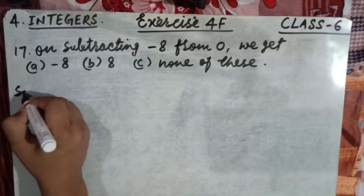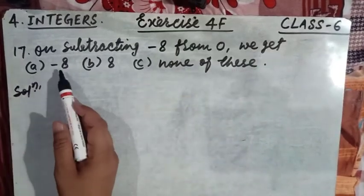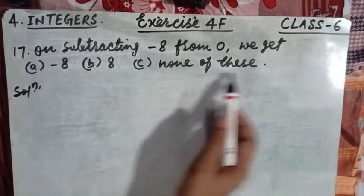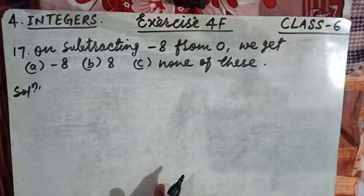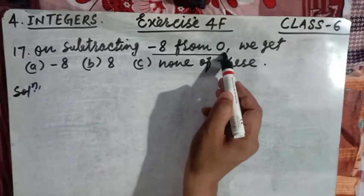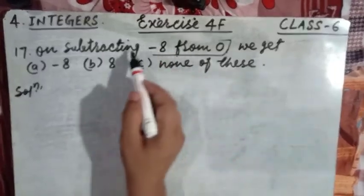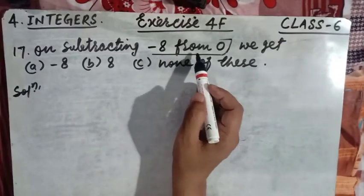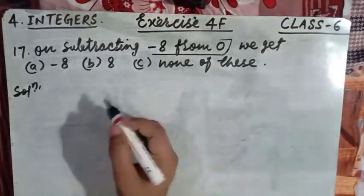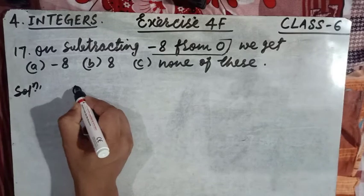Question number 17 says: on subtracting minus 8 from zero, we get — option A: minus 8, option B: 8, option C: none of these. We have to choose the correct option. Now regarding this type of question, the term written after 'from' is written first. So write zero first, then subtract, then write the term before 'from' in brackets.